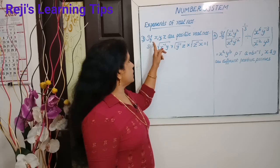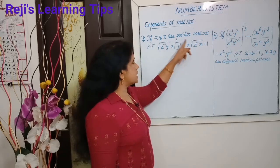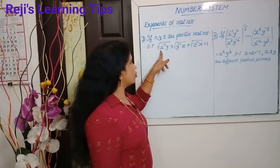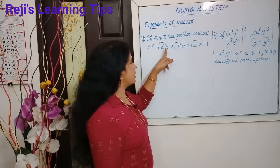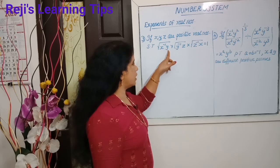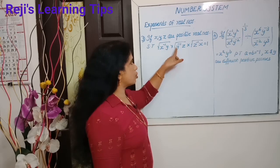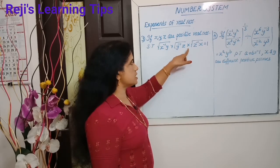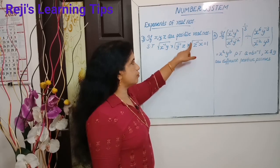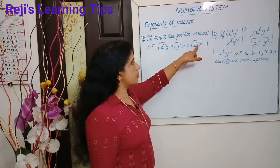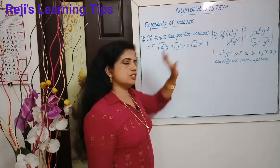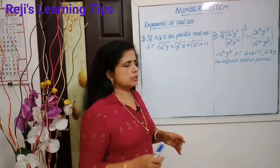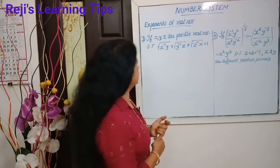If x, y, z are positive real numbers, show that root of x raised to minus 1 into y, into root of y raised to minus 1 into z, into root of z raised to minus 1 into x is equal to 1. Simple question, let's do it.